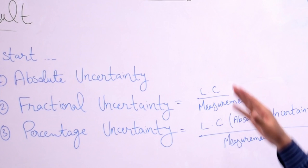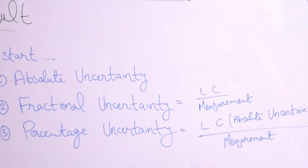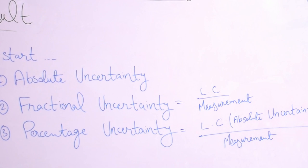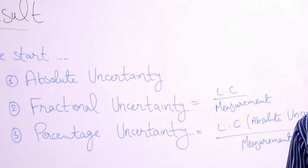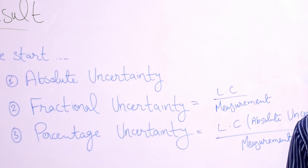I hope that these three main definitions are clear. With these definitions out of the way, we can jump into the calculations of total uncertainty. I will start with the case of addition and subtraction and will move further. If you understood the concepts I explained, please leave a thumbs up and share this video with your friends. Don't forget to subscribe. See you in the next video.